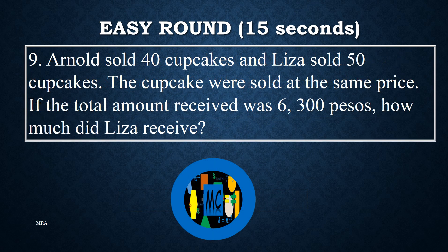Problem 9. Arnold sold 40 cupcakes and Liza sold 50 cupcakes. The cupcakes were sold at the same price. If the total amount received was 6,300 pesos, how much did Liza receive?